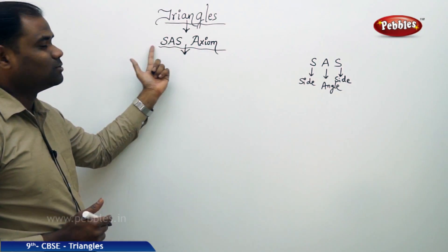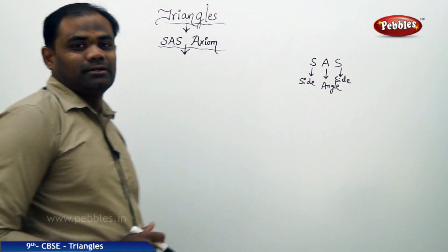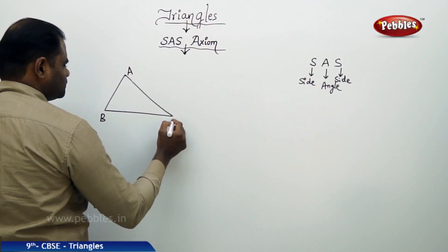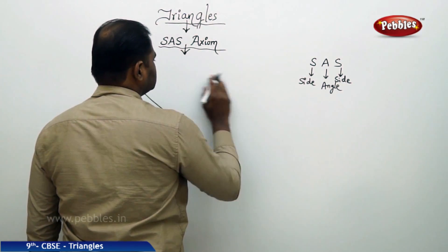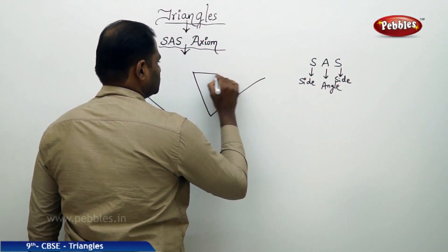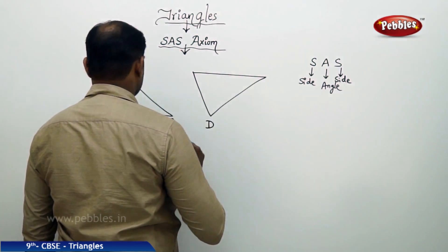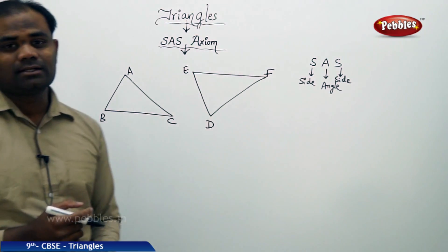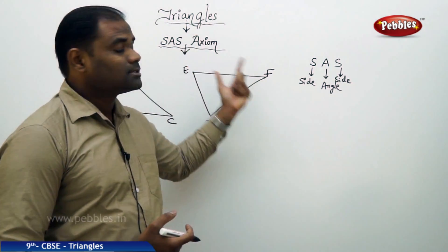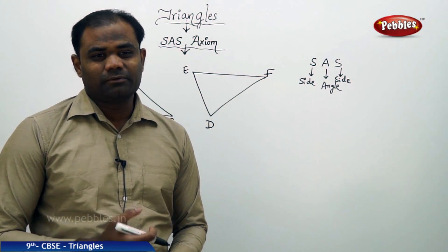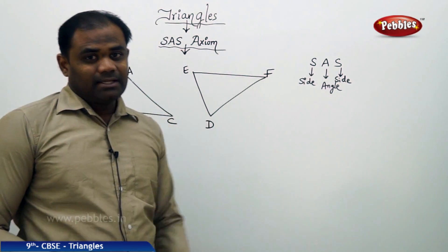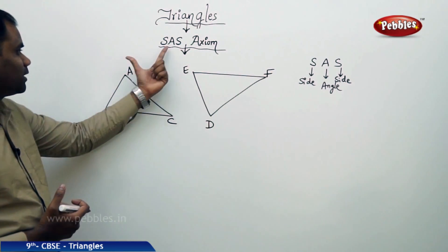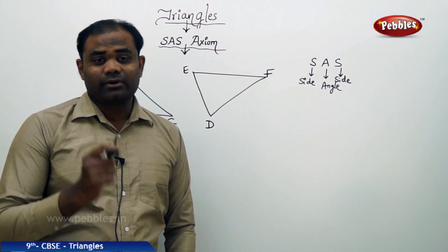The SAS side-angle-side axiom — importantly, the angle must be between the two sides we take into consideration. Let's take two triangles: triangle ABC and triangle DEF, and see if they are congruent through the SAS axiom. SAS axiom defines that if two sides and one included angle are equal in two triangles, then the two triangles must be congruent.